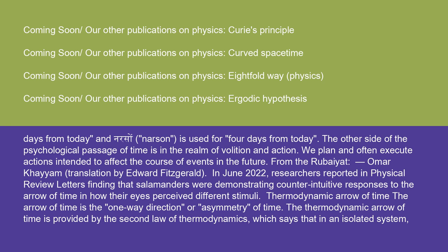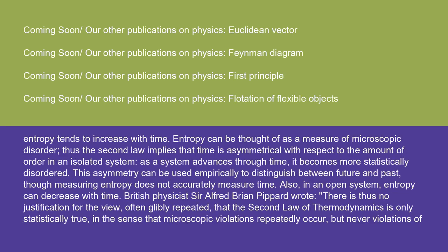The thermodynamic arrow of time is provided by the second law of thermodynamics, which says that in an isolated system, entropy tends to increase with time. Entropy can be thought of as a measure of microscopic disorder. Thus, the second law implies that time is asymmetrical with respect to the amount of order in an isolated system.